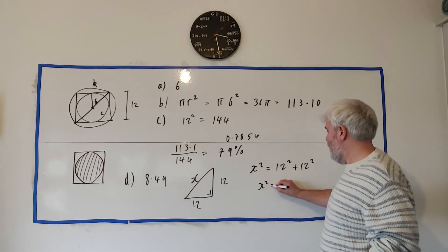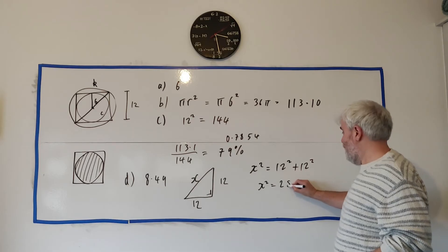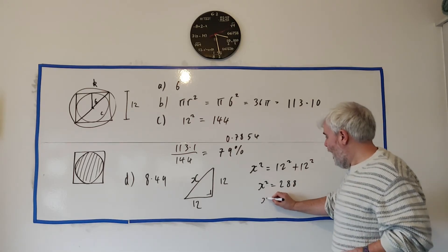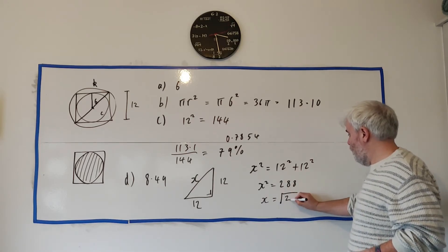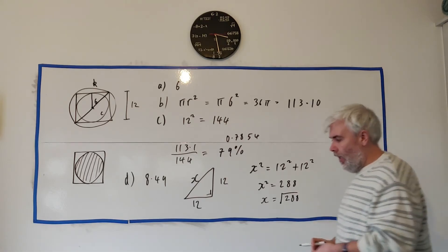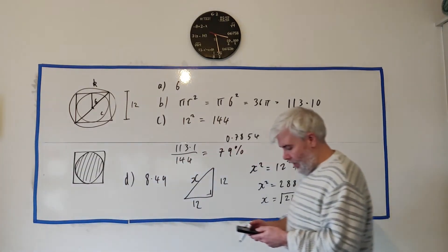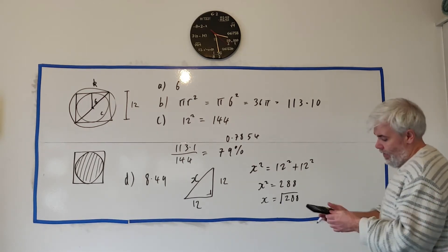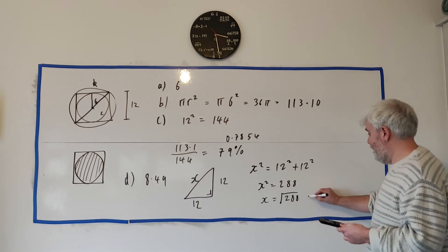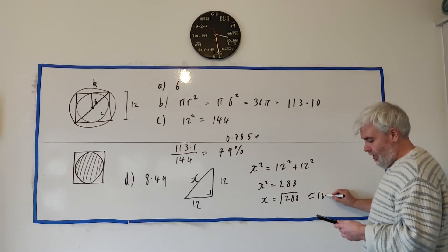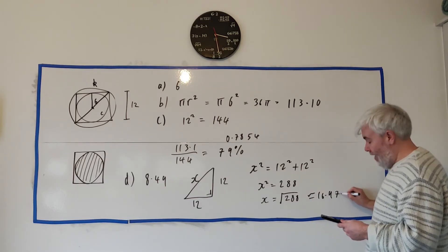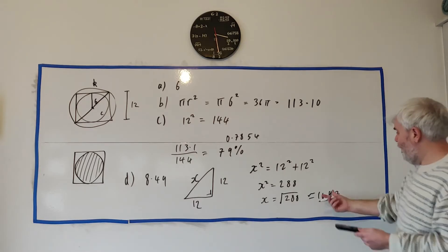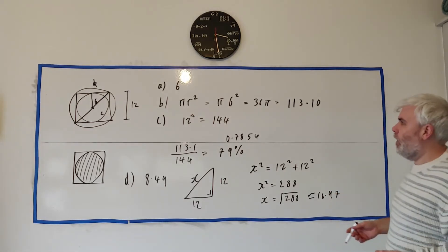Okay let's clean this up. We get x squared is equal to, let's see, 288. X is equal to the square root of 288 and that is, let me get that on a calculator, that is about 16.97.